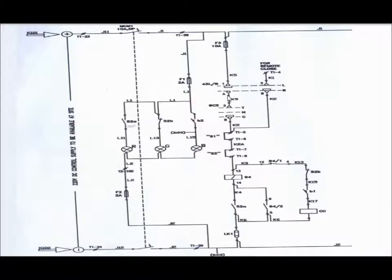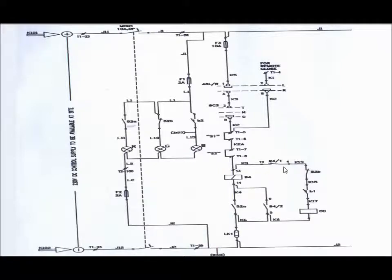Now if the local-remote selector switch remains in local position and we give the closing pulse from the control switch, the DC positive will come through the local-remote selector switch contact, to the control switch, to the auxiliary contact 94/1, to the auxiliary contact of 52B, and through the spring charge auxiliary contact to the closing coil. As soon as the closing coil energizes, the circuit breaker will be ON.